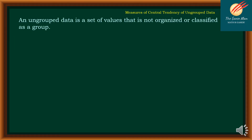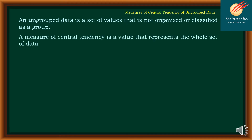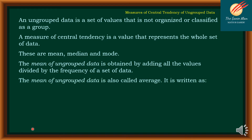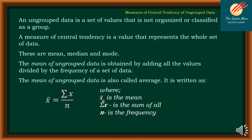Ungrouped data is a set of values that is not organized or classified as a group. A measure of central tendency is the value that represents the whole set of data, and these are the mean, median, and mode. The mean of ungrouped data, also called the average, is obtained by adding all the values divided by the frequency of a set of data. In symbol: mean = summation of x divided by n, where summation of x is the sum of all entries and n is the frequency.